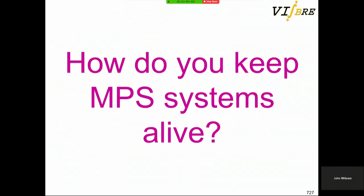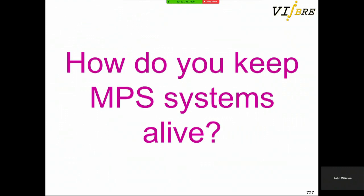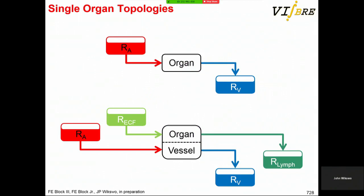You have to keep these systems alive. Basically, if you have an organ, you have an arterial reservoir and a venous reservoir and flow through the organ. In a brain on a chip with stromal tissue and vascular side, you need two parallel perfusion systems — one for extracellular fluid and one through the vessel.